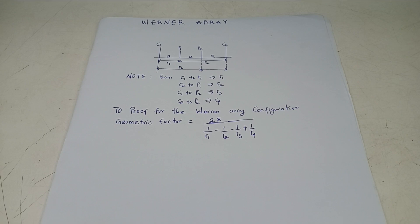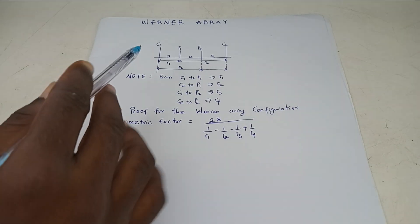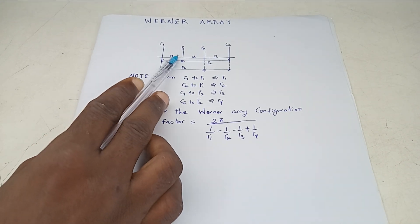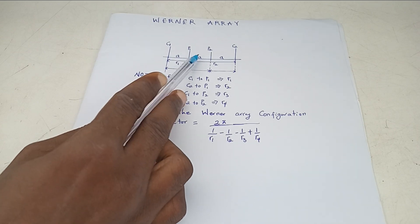So we're starting, the first video is on the Wenner array. Now, you know in the field, the Wenner array has a configuration in which the electrode spacing, that's the distance between the current electrode, between two electrodes, the first and the next one, will always be the same thing.